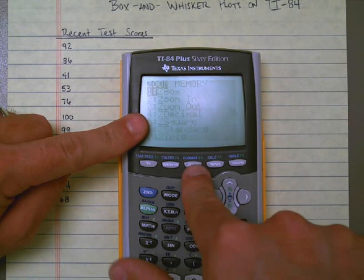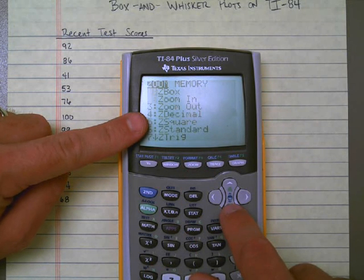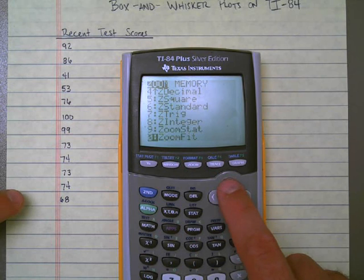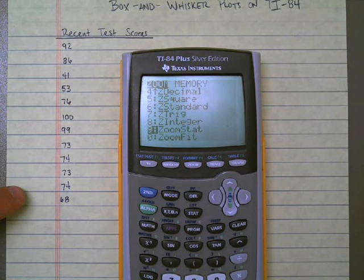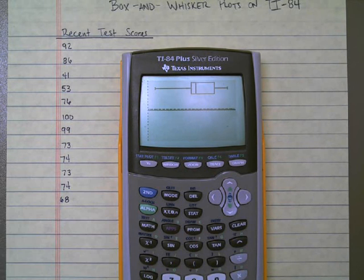But the nice thing is the TI-84 has this feature. If you go to zoom, and I scroll all the way down to the bottom, I have one that's called zoom statistics. And so that's the option I want to use. It's option 9, zoom to statistics. And if I hit enter, there's my box and whisker plot.